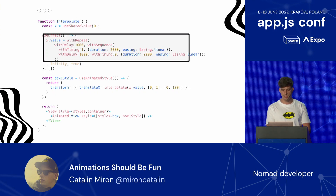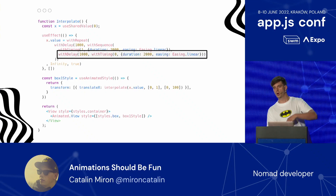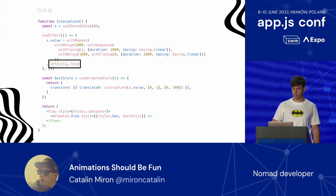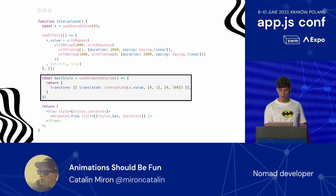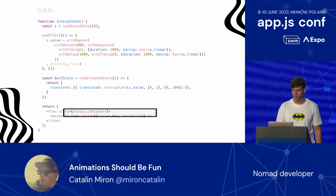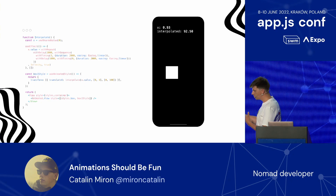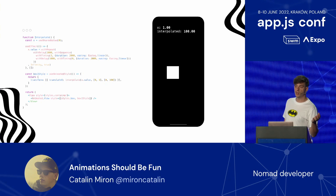Let me give you an example. I have a component, I'm initializing the shared value starting from zero, and I'm animating it — repeating with an initial delay, applying a sequence going to 1 with a duration of two seconds, going back again with a delay, and repeating this infinitely in reverse. Then I'm using useAnimatedStyle where I'm modifying the translateX using interpolation. I'm interpolating the x value, passing an input range of 0 and 1, an output range of 0 and 100, and finally applying this style to an animated view. The shared value moves from 0 to 1, but the interpolated value moves from 0 to 100.